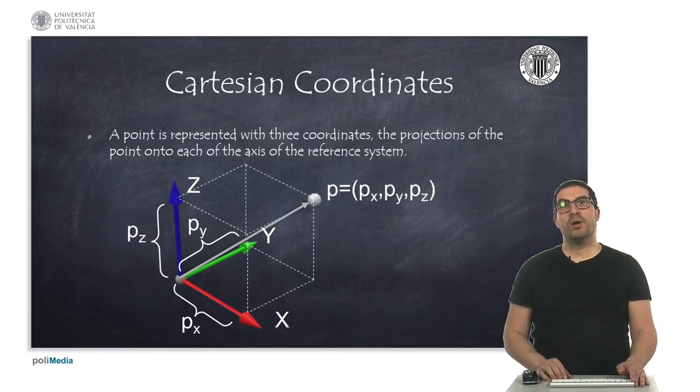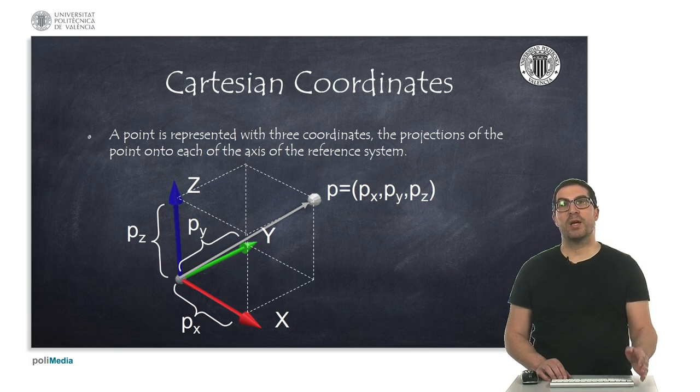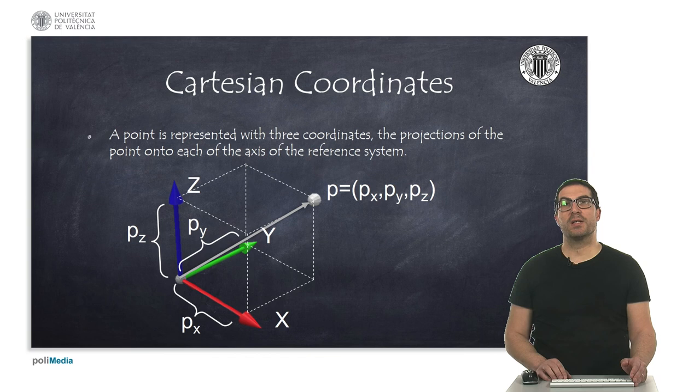A Cartesian coordinate system is one of the most common ways of representing a point in the space. It uses three coordinates, which are point projections with respect to each of the axes of the reference system. These coordinates are known as X, Y, and Z.